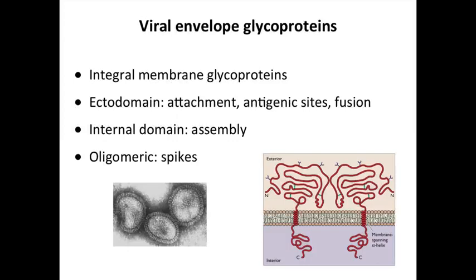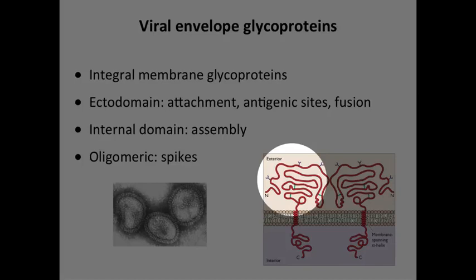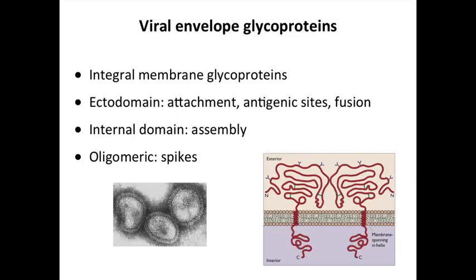Whenever a virus has an envelope around it, it also puts proteins of its own in the envelope. These are called viral envelope glycoproteins. These are typical integral membrane glycoproteins, shown schematically here on the right. Here is the envelope of the virus particle — it's a typical lipid bilayer — and these are viral glycoproteins that pass through the envelope. Typically, they have sequences in the interior of the virion as well as external sequences. These external sequences are very important: they bind receptors, so they can dictate cell specificity. And when you make antibodies against viruses, they are typically directed against these external domains of the glycoproteins.